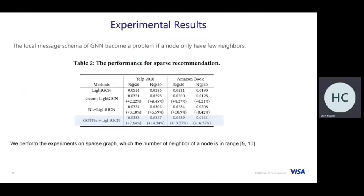We also conduct experiments on sparse recommendation settings, since the local message passing schema of GNN may be problematic when nodes have very few neighbors. We perform experiments on a sparse graph where the number of neighbors is only in the range of 5 to 10. The results for the Yelp and Amazon Book datasets show that our non-local GNN achieves the best performance. Most of the time, non-local GCN improves GNN performance because when neighbors are very sparse, local message passing cannot capture enough information to update the embeddings.